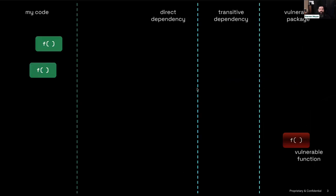If you imagine a piece of software — code that I or my developers have written, with functions in it, those are the green boxes on the left — those functions call things. This is one way of thinking about an application: a collection of functions. I'm consuming open source and private packages from other people, using all these other functions that other people wrote. And somewhere in this big collection, my tools have identified: hey, there's a package with a vulnerability in it.